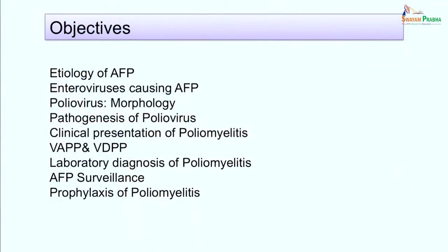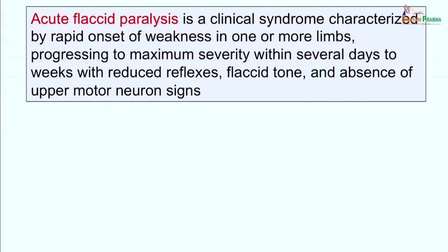The objectives for this session are: at the end of the session you will be able to describe the etiology of acute flaccid paralysis (AFP), enumerate enteroviruses causing AFP, describe the structure of poliomyelitis virus, pathogenesis of poliomyelitis, clinical presentation, vaccine-associated paralytic poliomyelitis and vaccine-derived paralytic poliomyelitis, laboratory diagnosis of poliomyelitis, AFP surveillance, and prophylaxis of poliomyelitis.